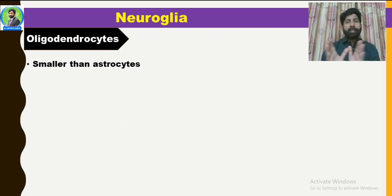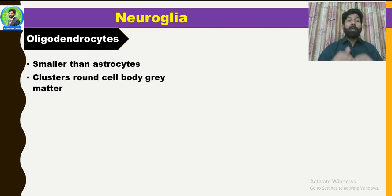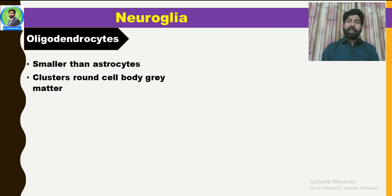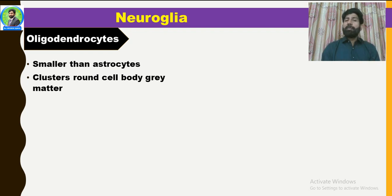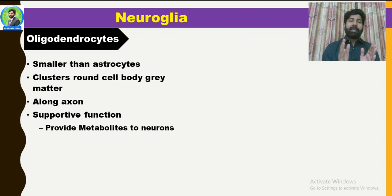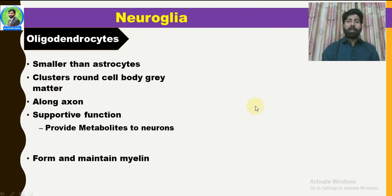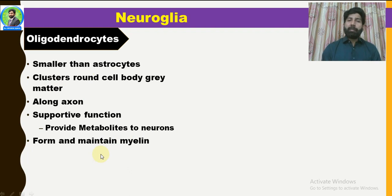The next type is Oligodendrocytes — 'oligo' meaning few, and 'dendro' meaning branches. These are neuroglial cells which have few branches. They are smaller than astrocytes and form clusters around the cell body in the grey matter. They only exist in the CNS and are not part of the peripheral nervous system. In the grey matter, where cell body aggregation occurs, they form clusters to protect the cell bodies. They also present along the length of the axons, providing supportive and metabolic functions to neurons. They are responsible for forming and maintaining the myelin sheath, similar to Schwann cells in the peripheral nervous system.